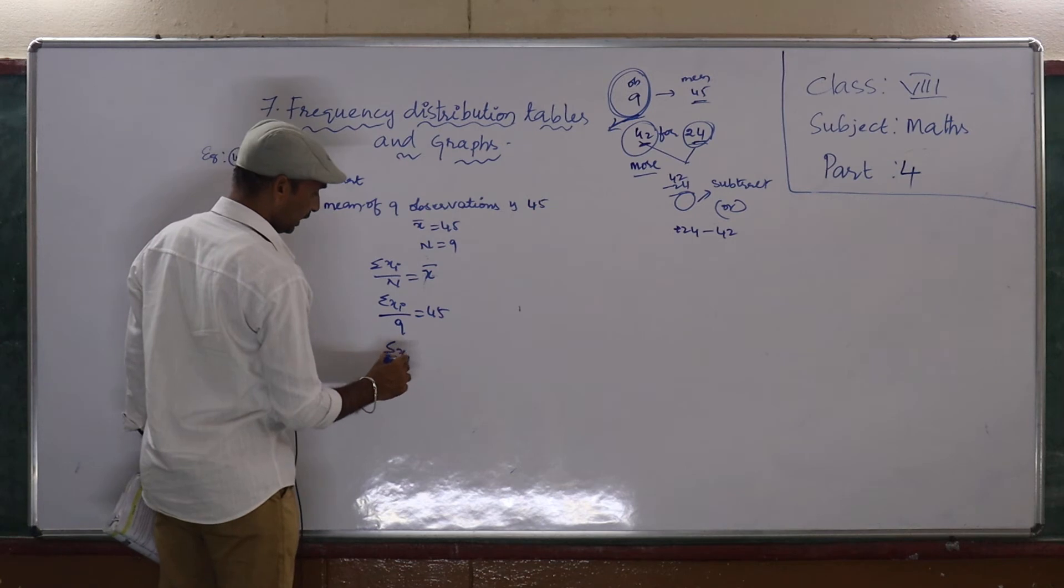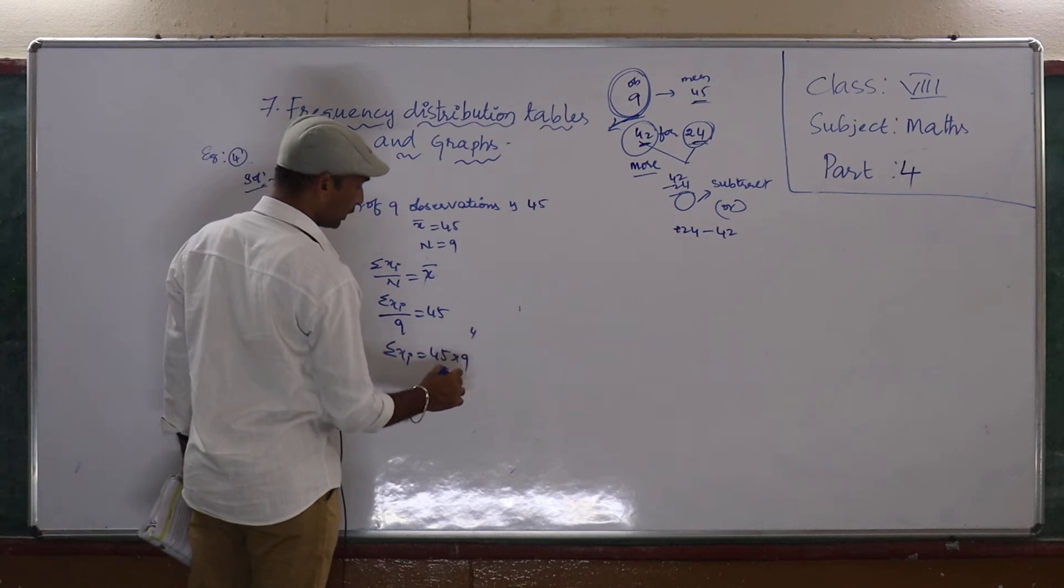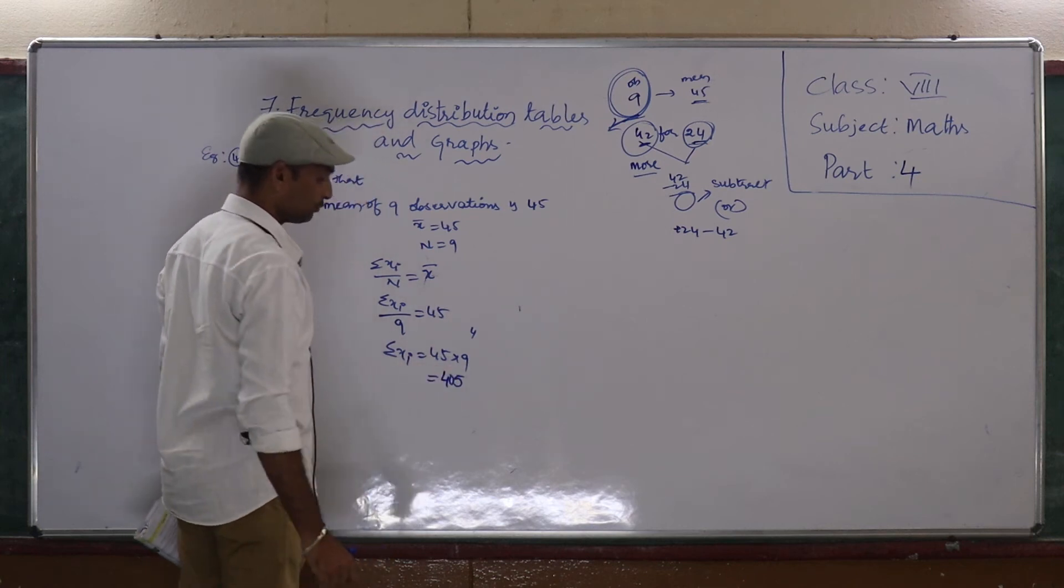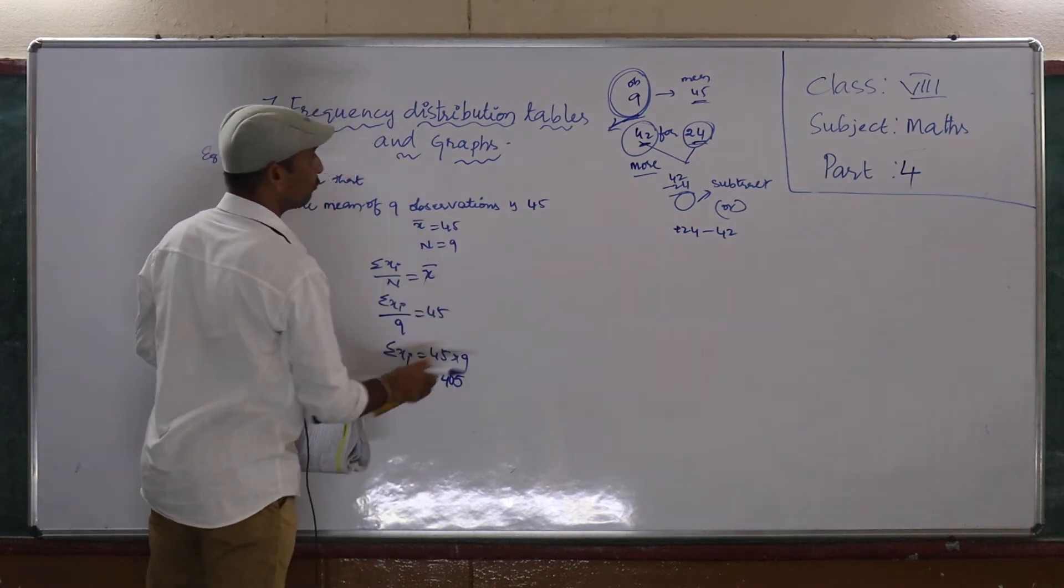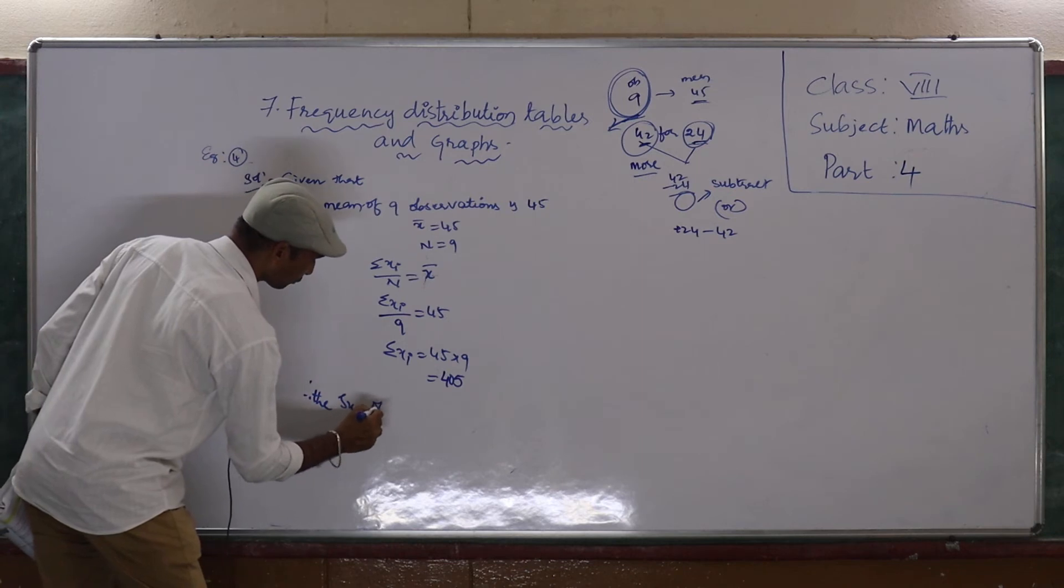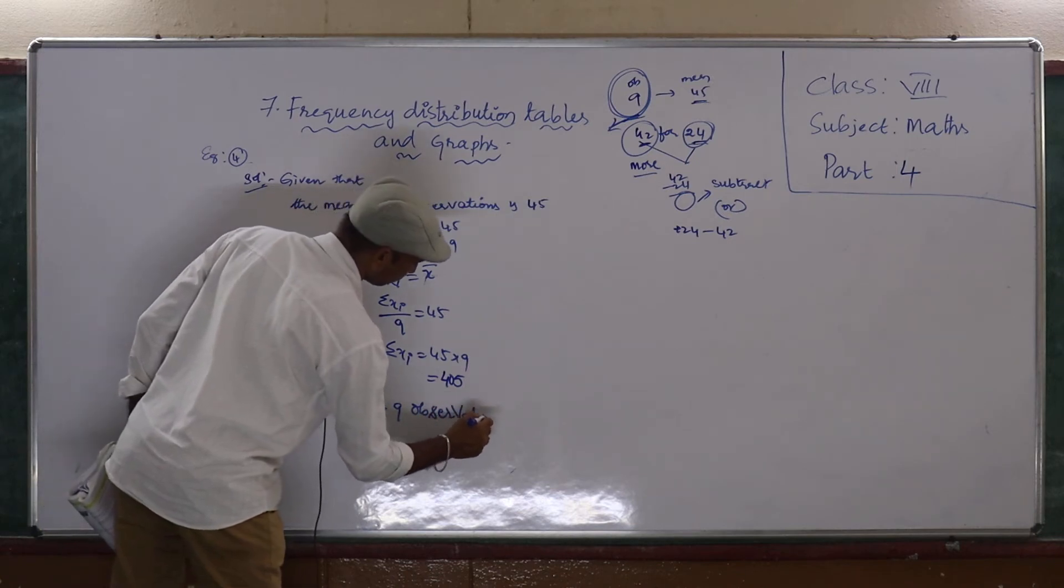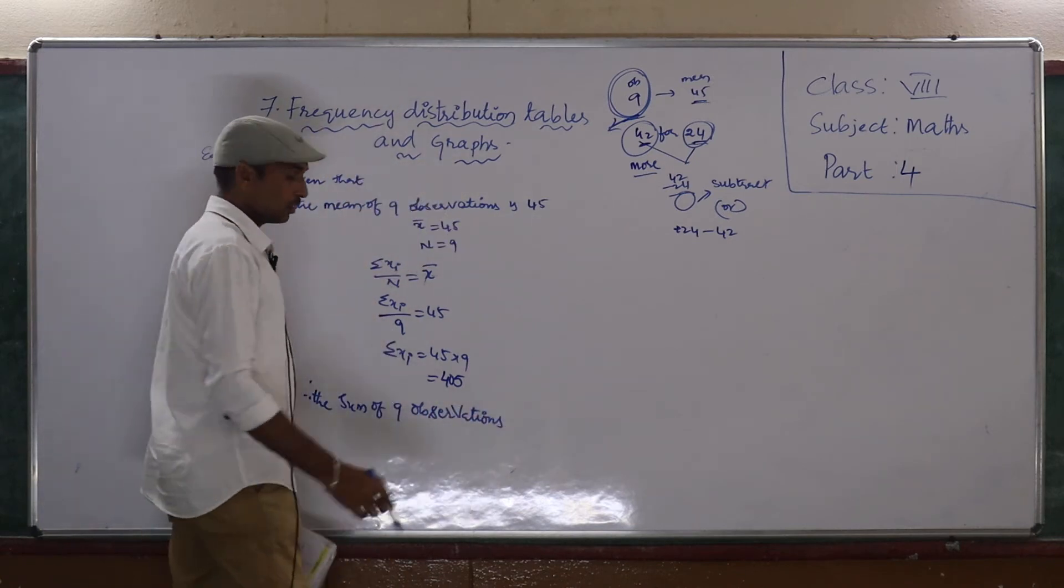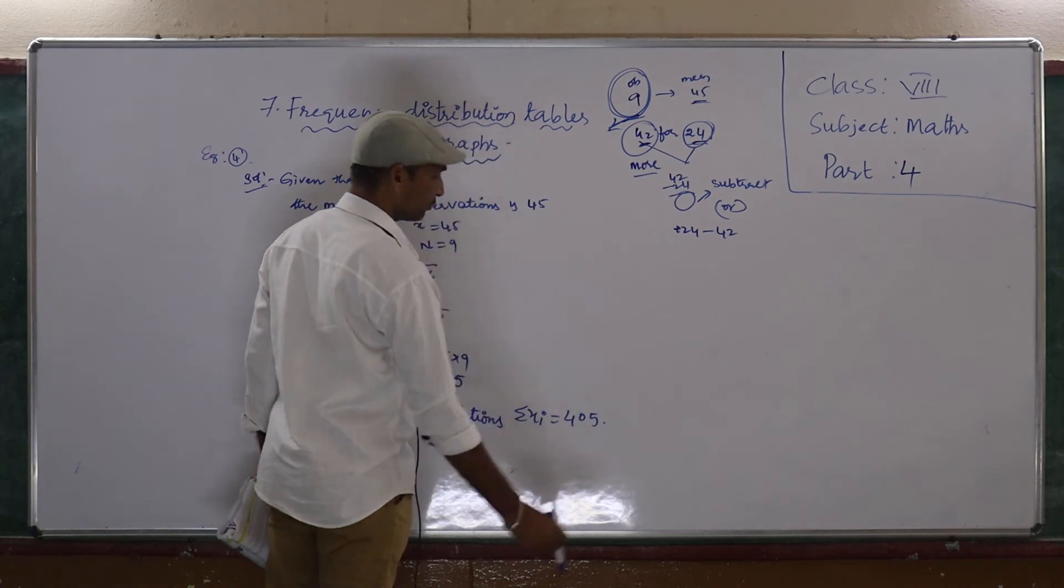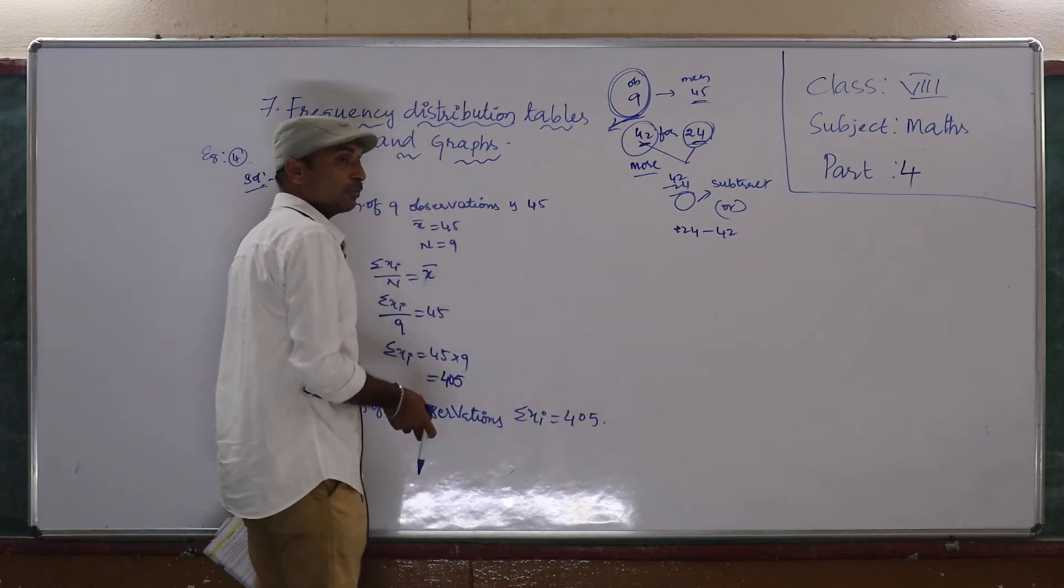Then sigma xi is equal to 45 into 9. 9 times 5 is 45, 4 carry. 9 times 4 is 36 plus 4, 40. So, this is the sum of 9 observations. Sigma xi is equal to 405. This is the value if you add 9 observations.